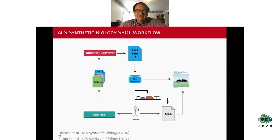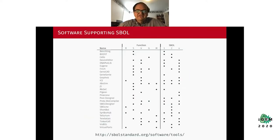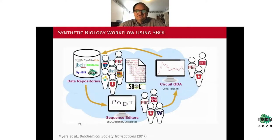A key aspect of this workflow is that you need good genetic design automation tools. Many tools have been developed that support the SBOL data standard and they can be grouped into three categories: data repositories where you can get genetic design information, sequence editors where you can build up genetic circuits from genetic parts, and circuit design tools where you can do modeling and simulation. You can then upload your designs back into data repositories to share with other researchers.